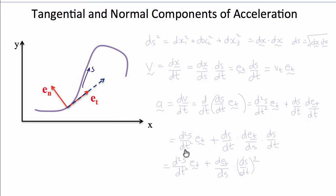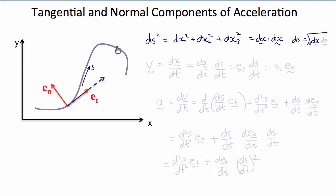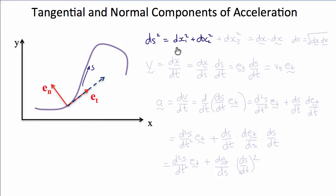Now let's consider curvilinear motion and resolve the tangential and normal components of the acceleration. This requires a little bit of differential geometry. The key trick is to create a parameter s, which you can think of as the arc length that varies continuously along the trajectory of the moving particle. We can define ds, the length of any segment along the trajectory, using Pythagoras: ds squared equals dx1 squared plus dx2 squared plus dx3 squared, or in vector notation, dx dot dx.